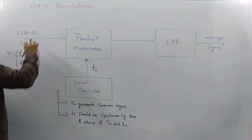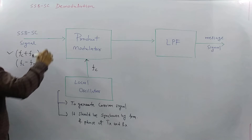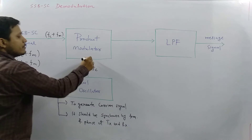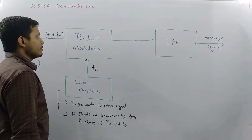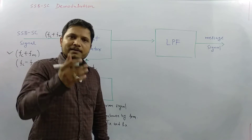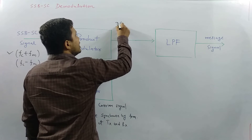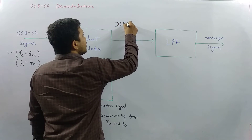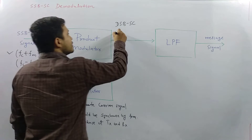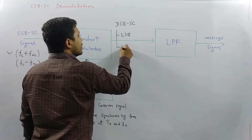So we have the SSB-SC signal at frequency FC plus FM and the carrier signal at frequency FC. The product modulator takes these two inputs and generates a DSB-SC output. This results in two frequency bands — one lower sideband and one upper sideband.